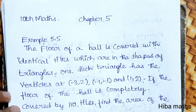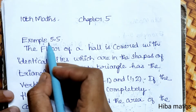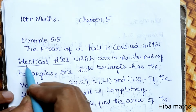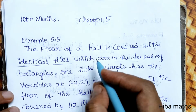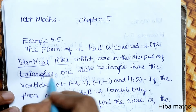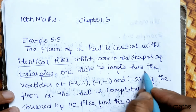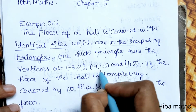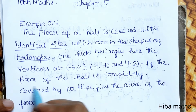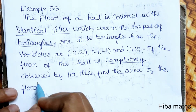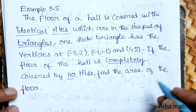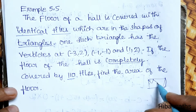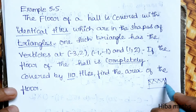Hello students, welcome to Hypermax 10 Standard Max, Chapter 5, Example 5.5. The floor of a hall is covered with identical tiles. The tiles are in the shape of a triangle. One such triangle has vertices at (-3, 2), (-1, 1), and (1, 2). There is a diagram of the floor, which is in the triangle shape, and the tiles cover it.